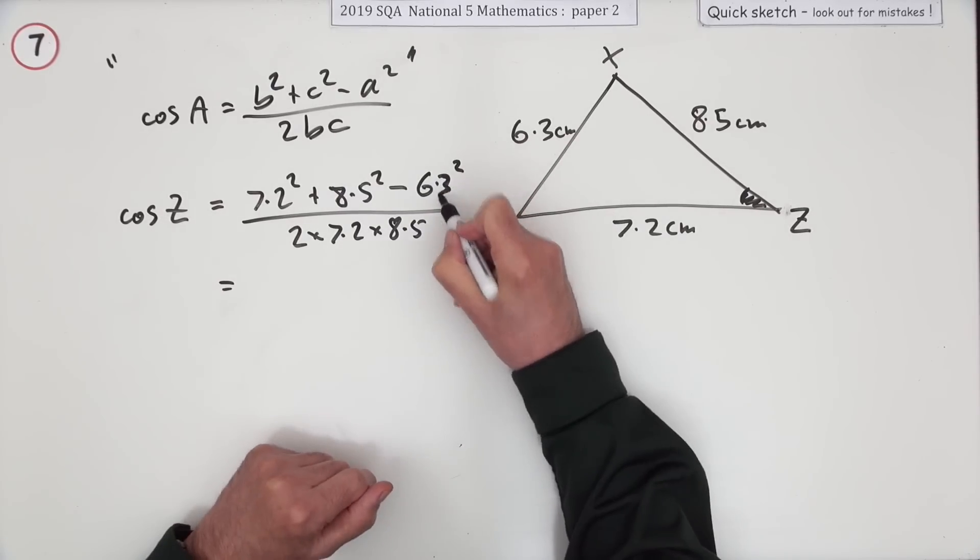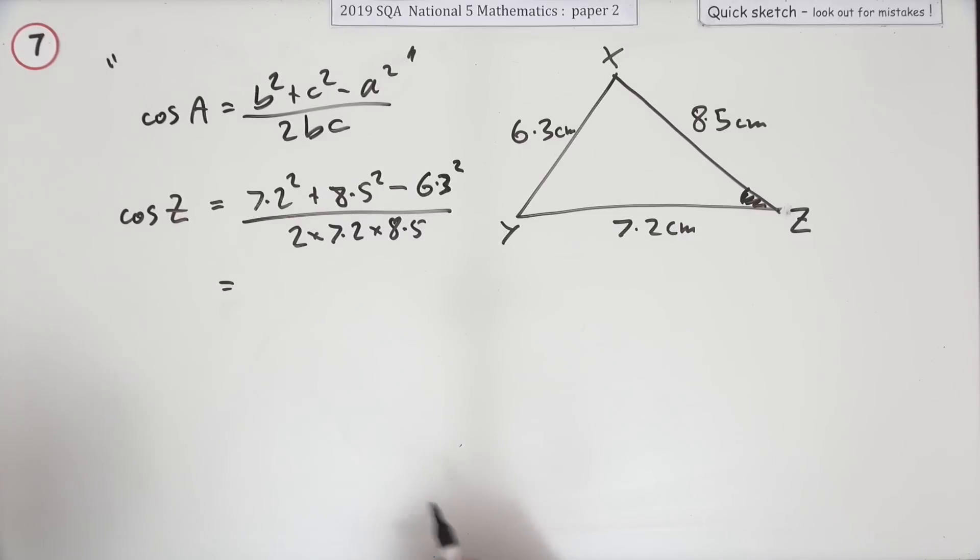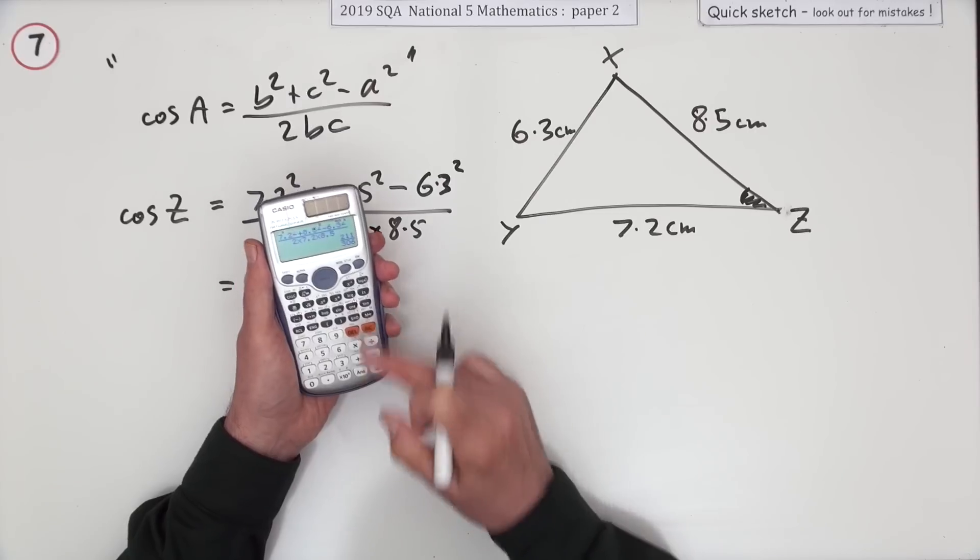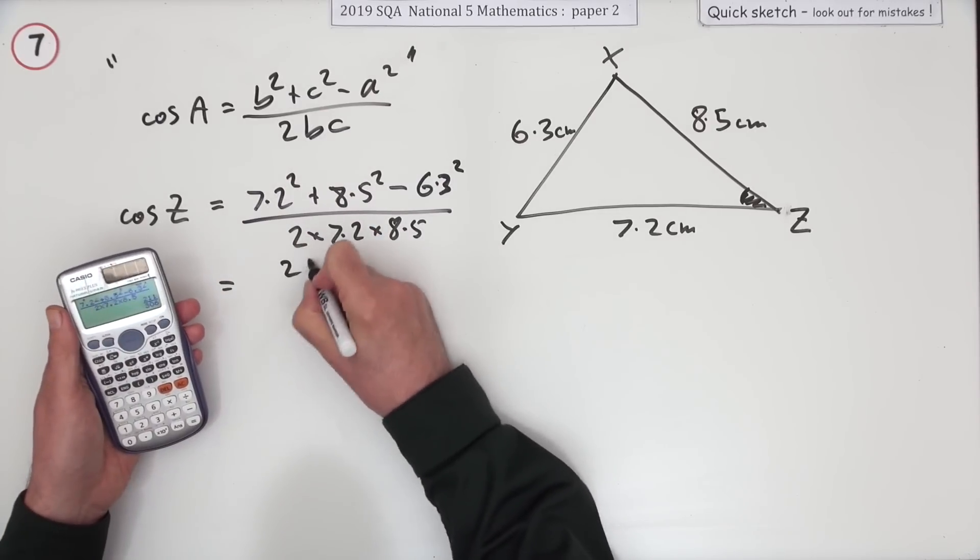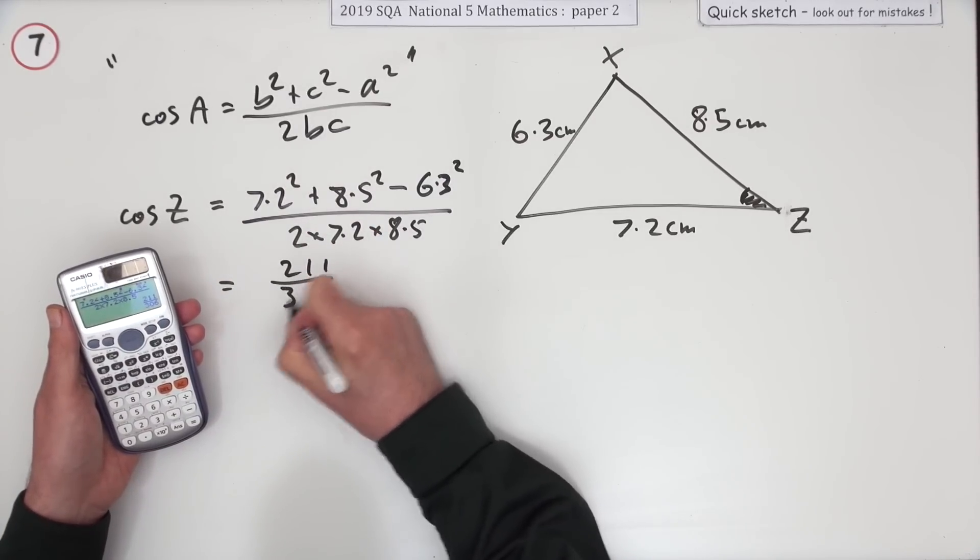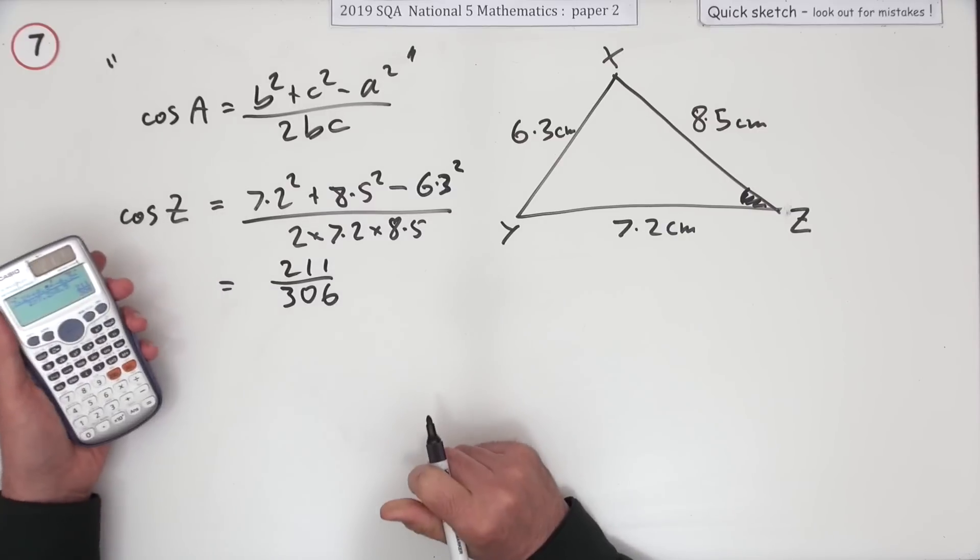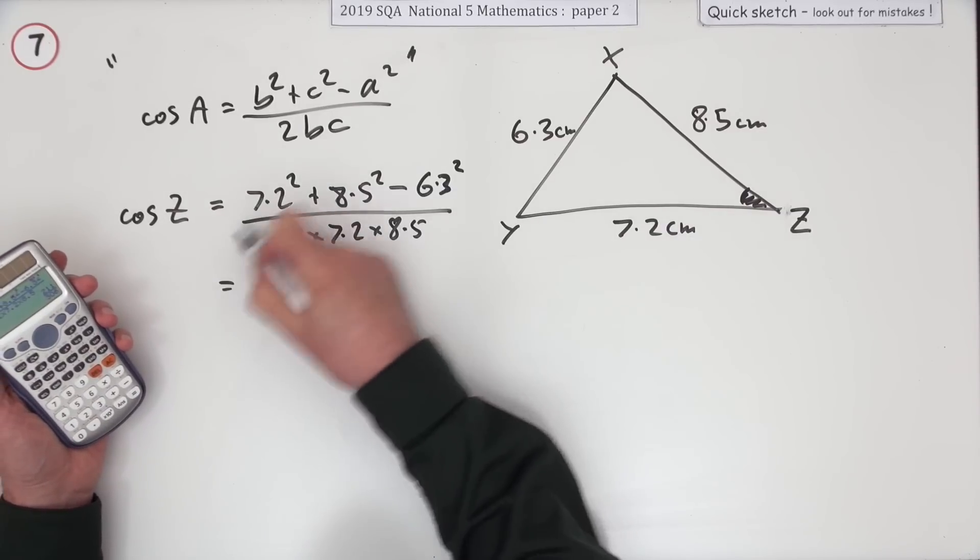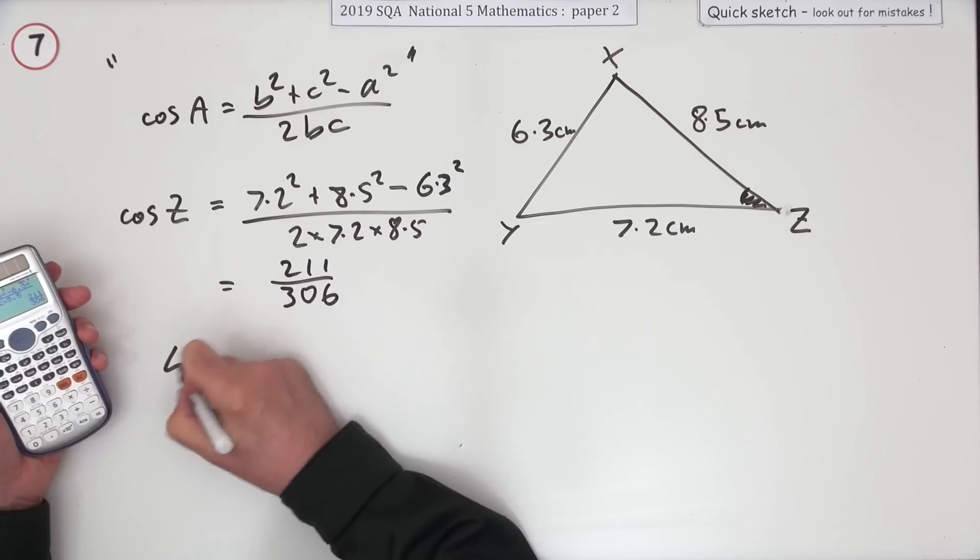Having done that, all that remains is to pop that into your calculator. When you put that into your calculator and press equals, it very nicely comes up with a little fraction for you, so you know it's completely accurate. You could have gone in with angle z is inverse cos.